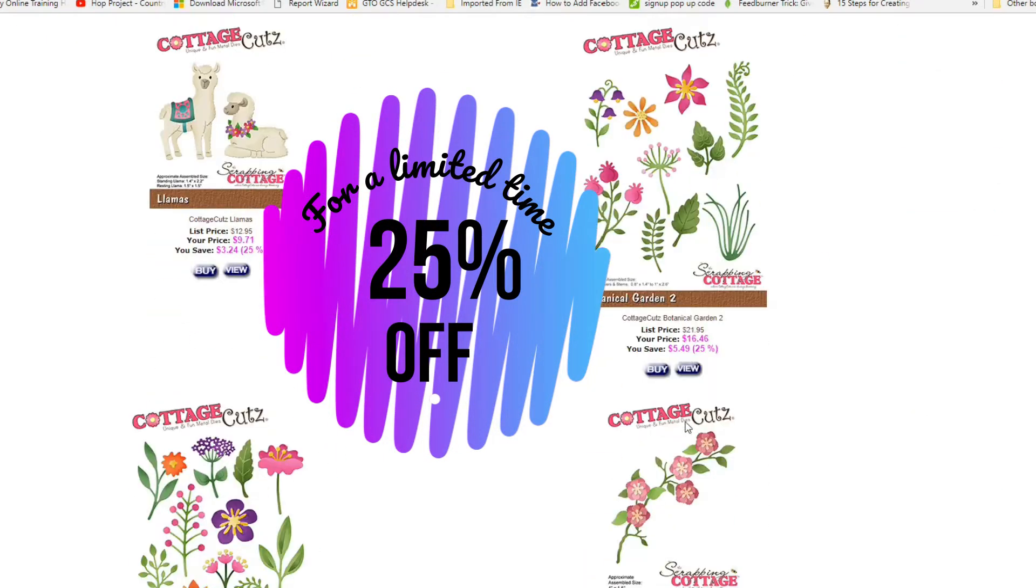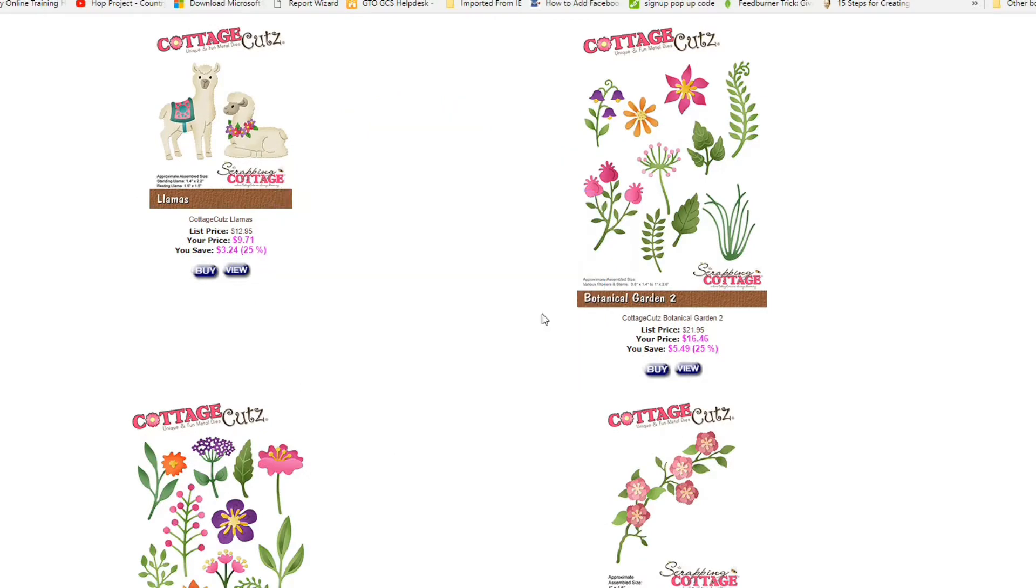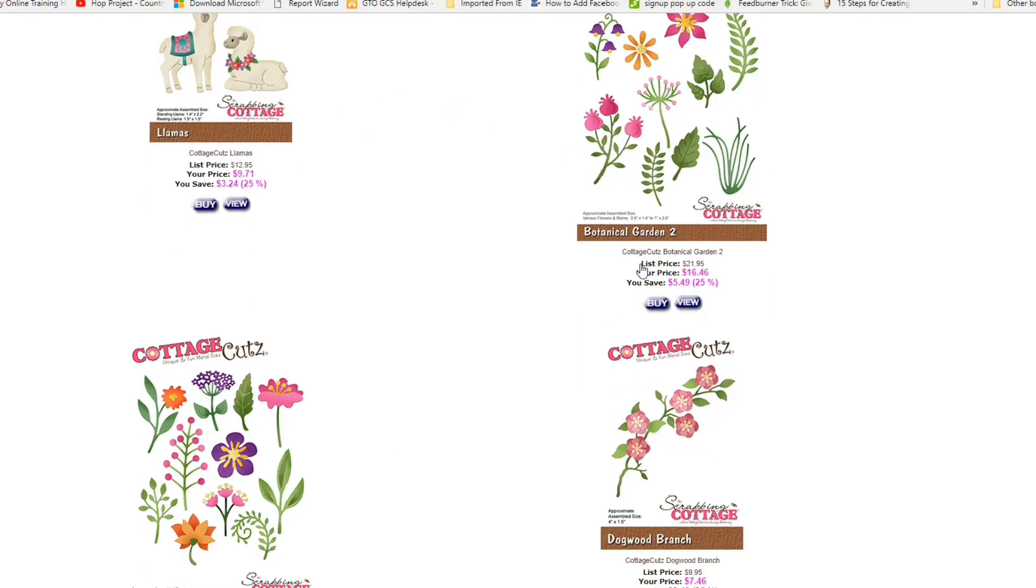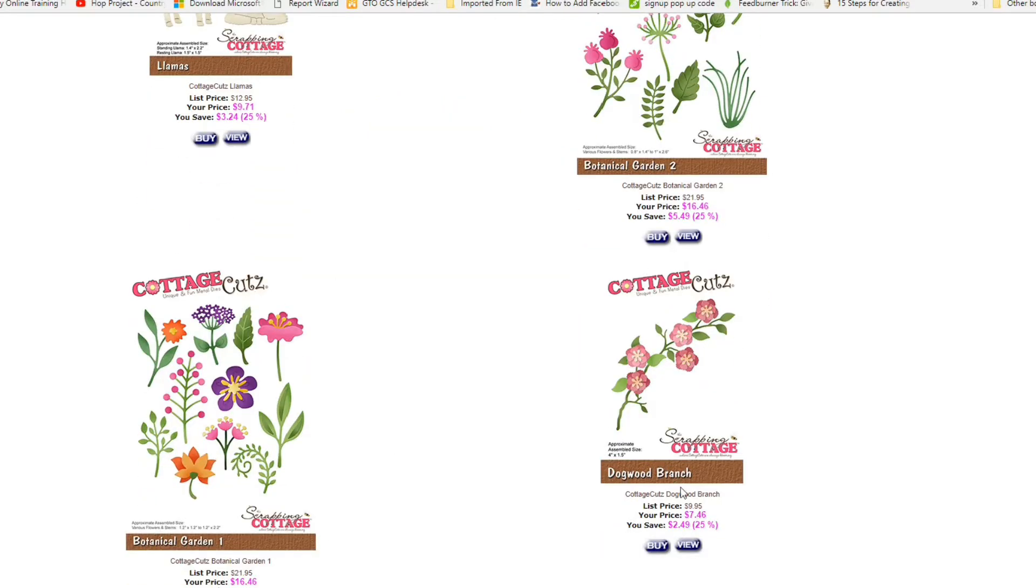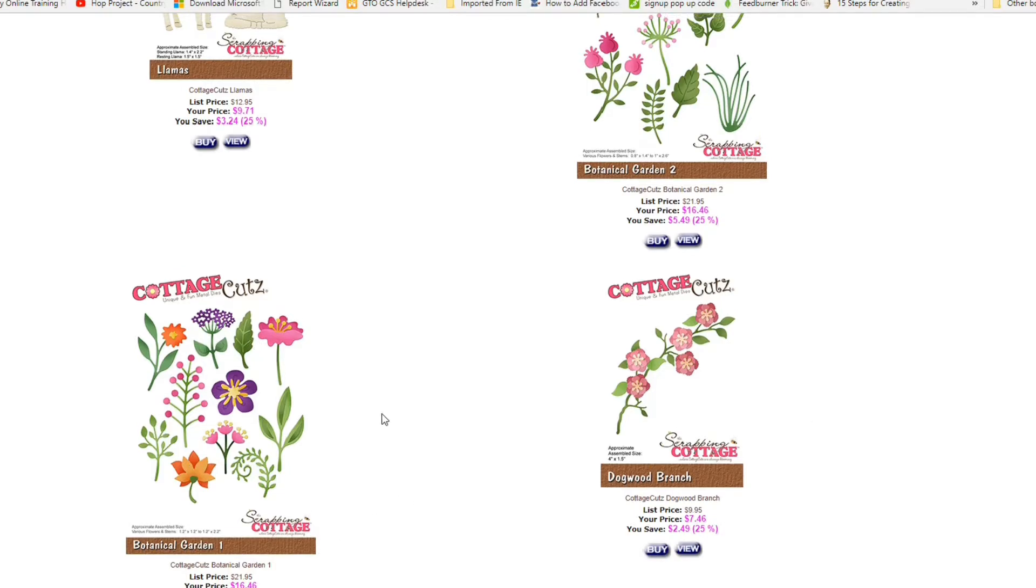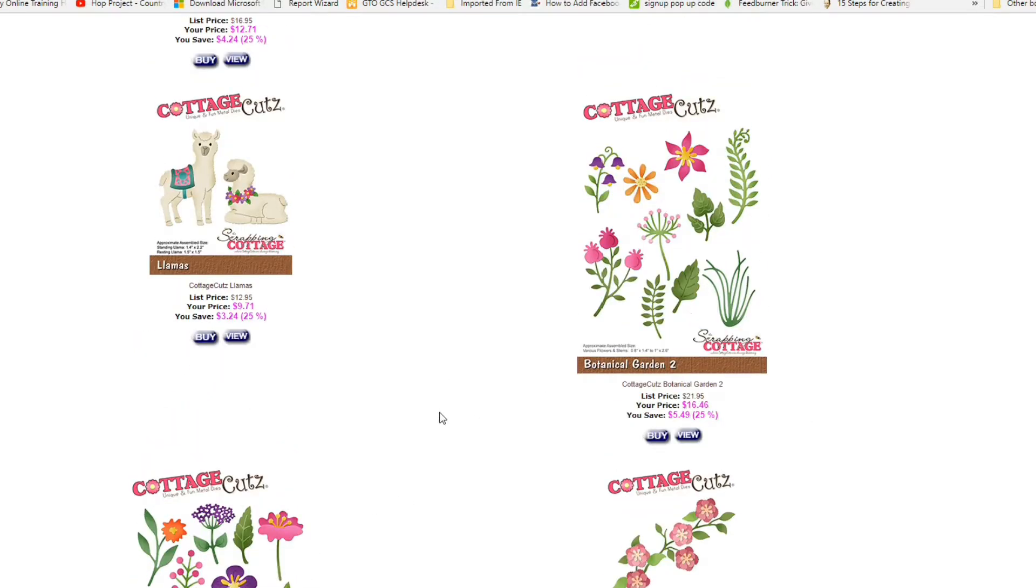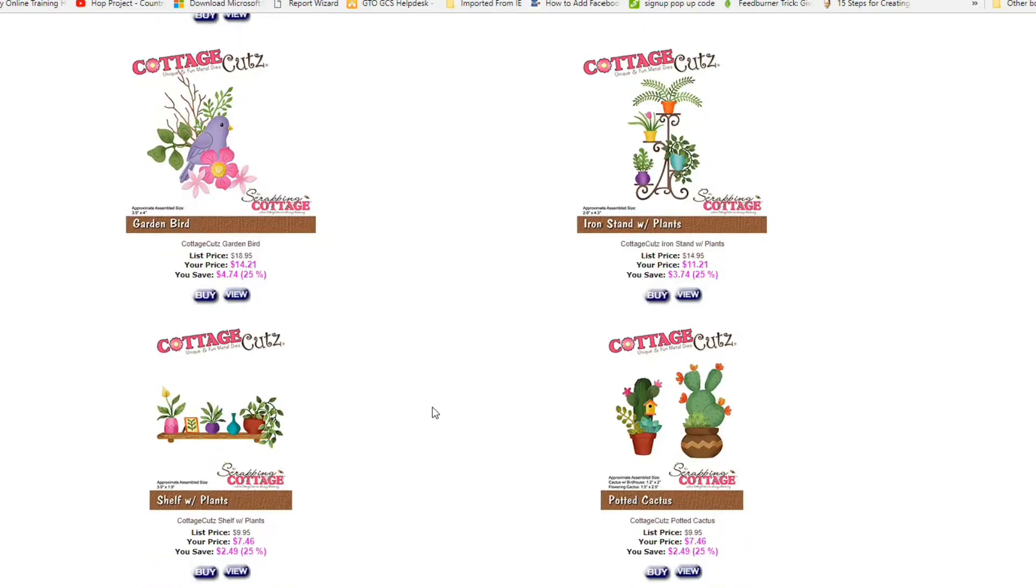This includes a couple of llama die sets as well as eight flowers, and we've got also three cactus or succulent dies. Altogether there are 13 and they're just really wonderful.